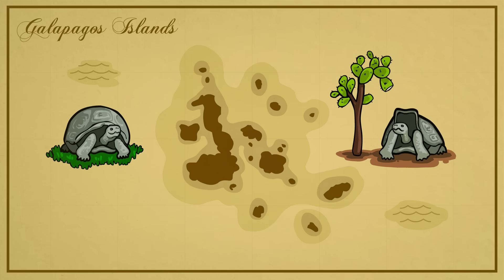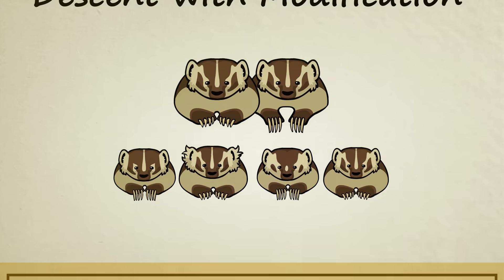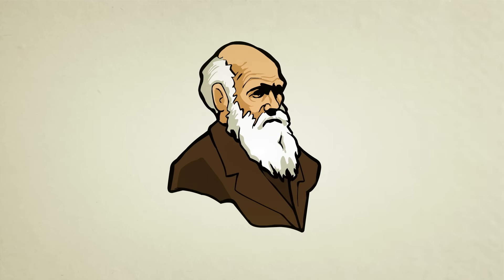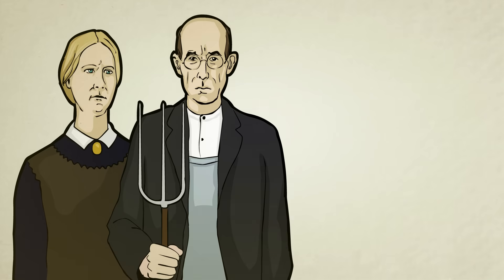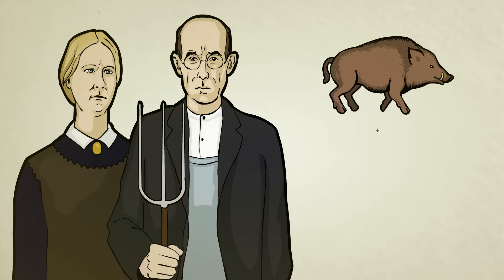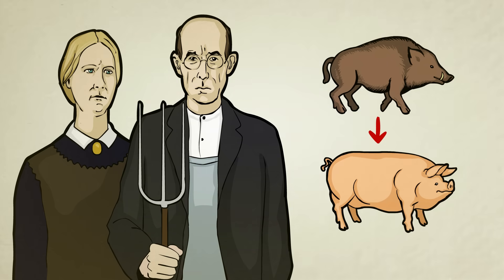How did this sculpting take place? Random descent with modification alone could never do such a thing. Darwin drew upon his knowledge of selective breeding to answer this question. For thousands of years, farmers have been taking wild plants and animals and through the process of selective breeding, have sculpted the original wild forms into new domestic forms much better suited for human use and consumption.